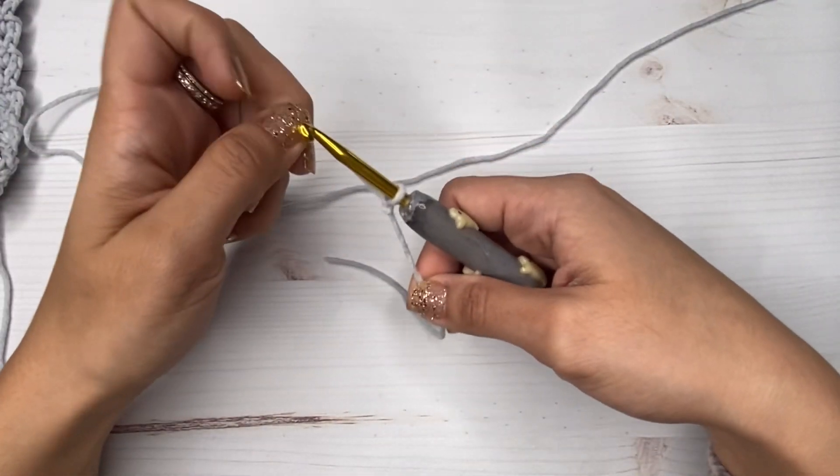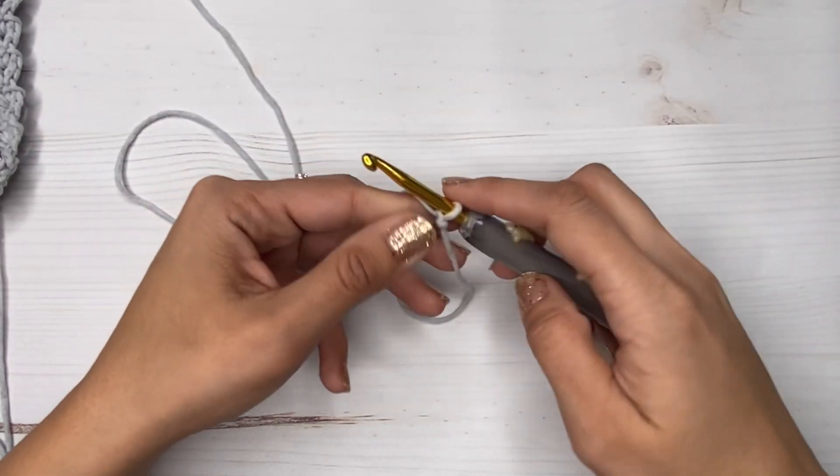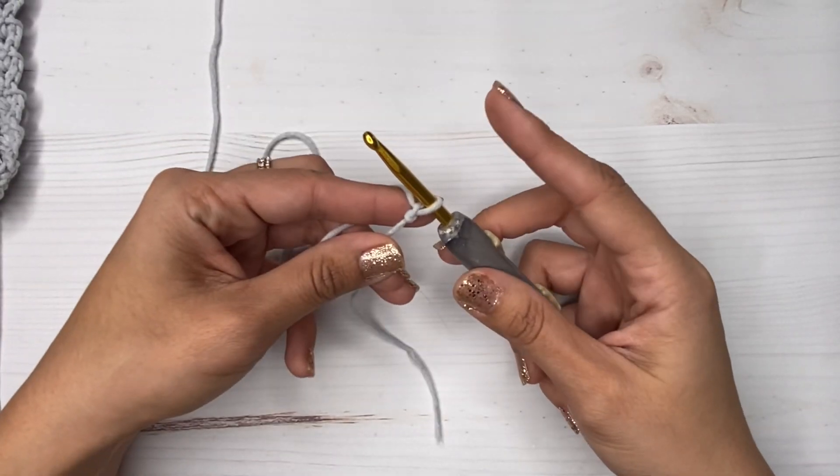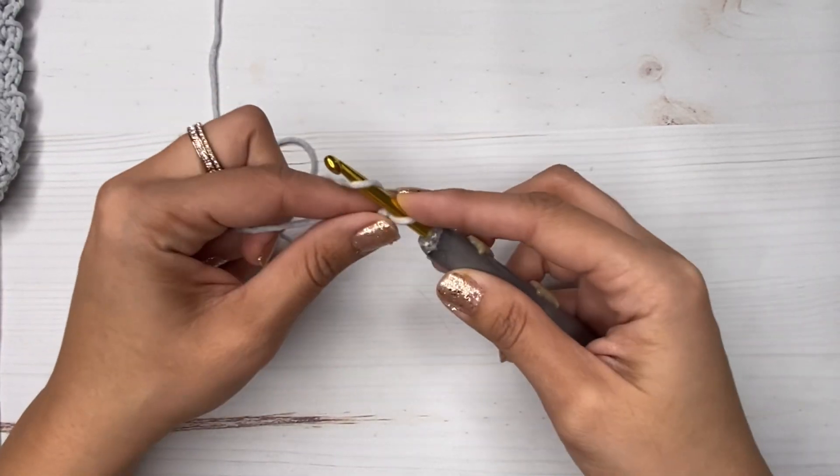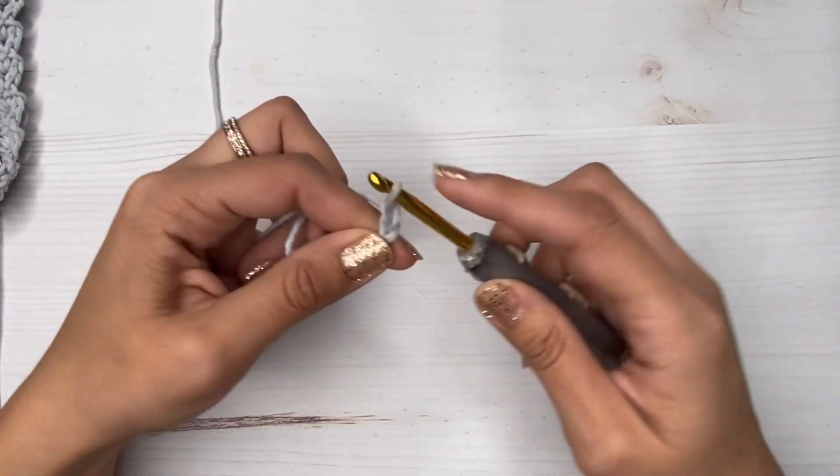Once we have our slip knot ready, we are going to chain five, and this is going to be the width of our keychain. Of course, if you want it a little bit wider, just chain more, but for mine I just did five.